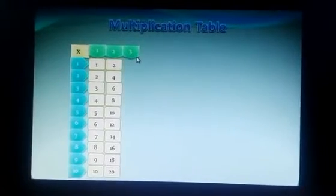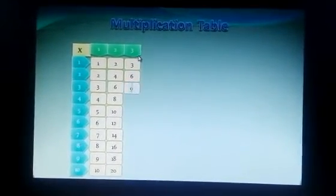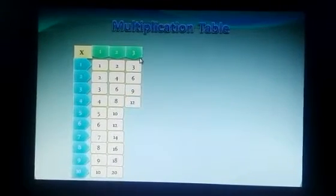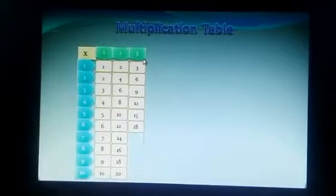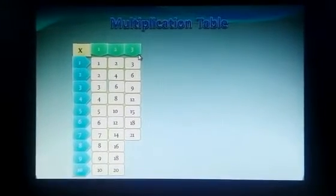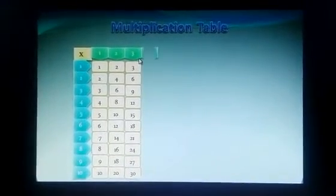Now, times table of 3. 3 times 1 is 3, 3 times 2 is 6, 3 times 3 is 9, 3 times 4 is 12, 3 times 5 is 15, 3 times 6 is 18, 3 times 7 is 21, 3 times 8 is 24, 3 times 9 is 27, 3 times 10 is 30.